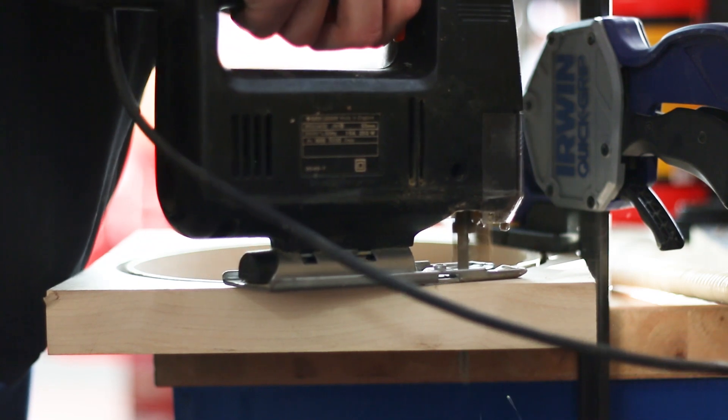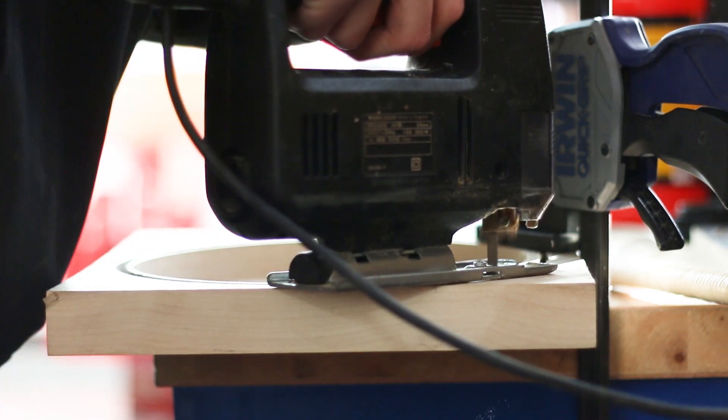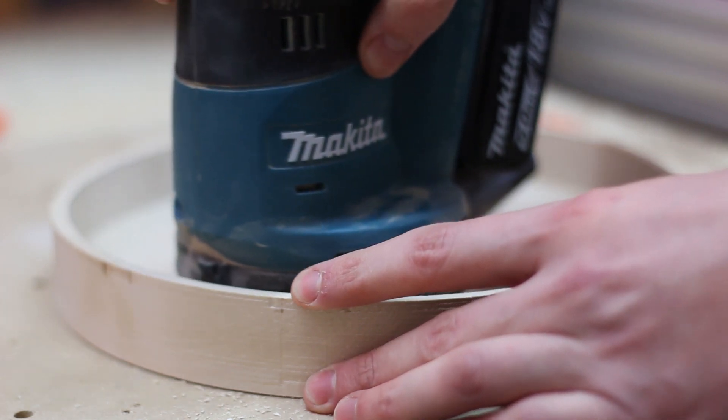Now that we've removed the workpiece from the machine, we're going to cut away the tabs using a jigsaw and sand using 240 grit sandpaper.